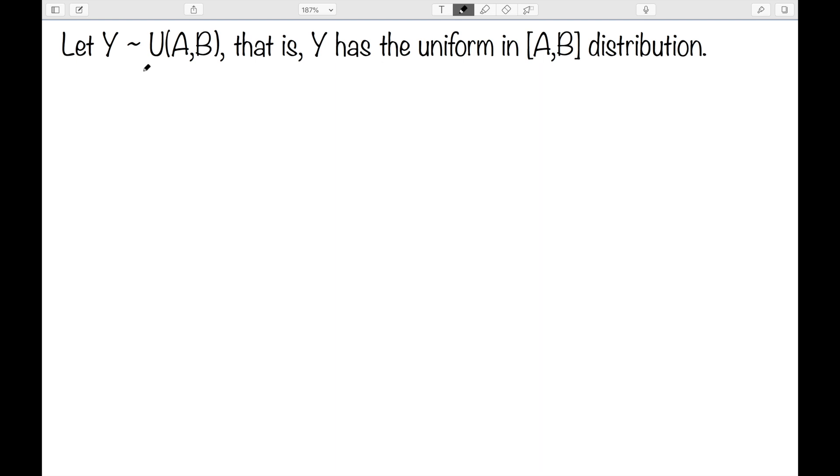Next, let's suppose y is U(a, b). So that is, y has the uniform in a to b distribution. We're going to let x be the uniform distribution from 0 to 1, and we've already shown in a previous video that the variance of this is 1 over 12.